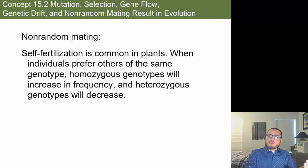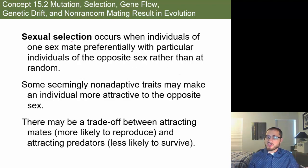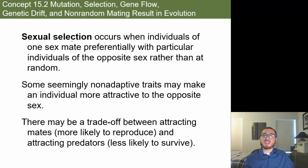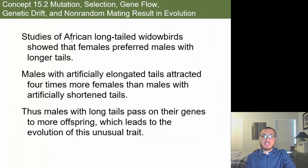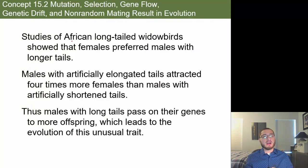The founder effect describes changes in allele frequency when a few individuals colonize a new area after a bottleneck — the new population becomes very different because some genes were weeded out of the gene pool. Non-random mating is also a factor; in plants, self-fertilization is common, and when individuals prefer others with the same genotype, homozygous genotypes increase in frequency while heterozygous genotypes decrease.